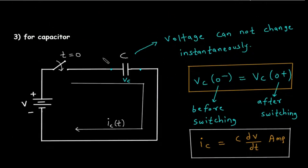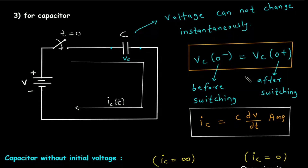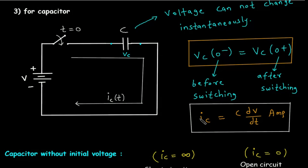For a capacitor, voltage cannot change instantaneously. Let the voltage across the capacitor be Vc. The voltage before switching equals the voltage after switching: Vc(0⁻) = Vc(0⁺). The capacitor current is IC = C·dV/dt, where dV/dt is the change in voltage with respect to time.